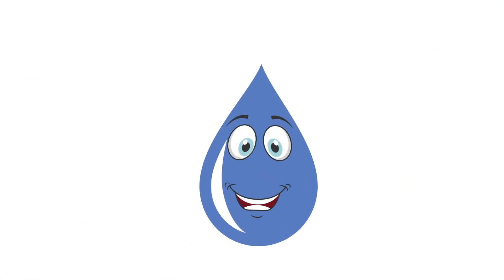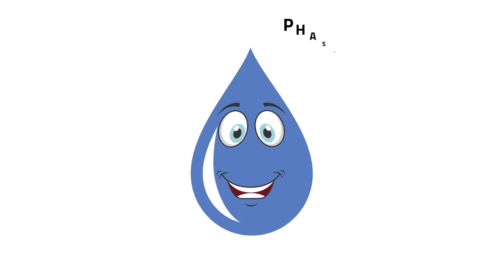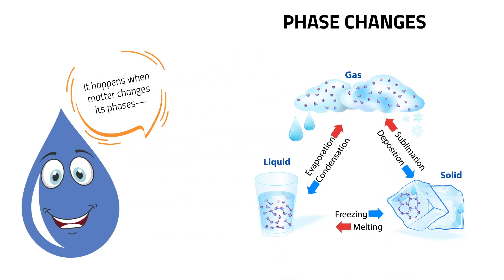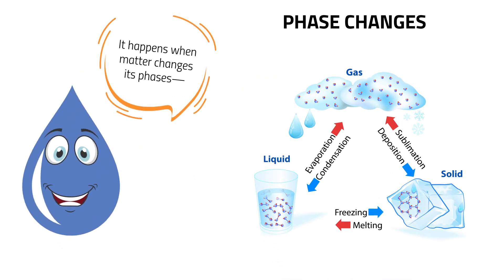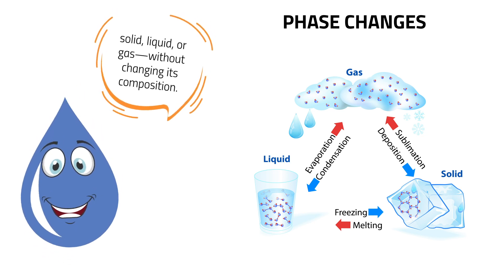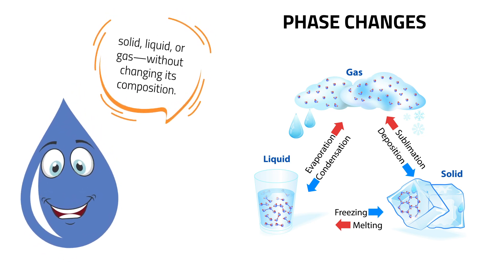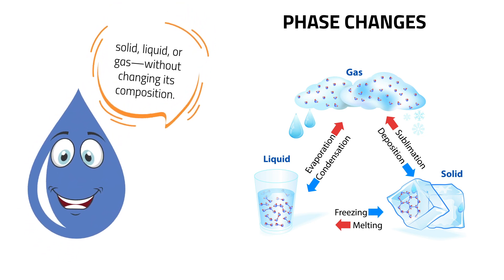The changes that take place in matter are called phase changes. It happens when matter changes its phases — solid, liquid, or gas — without changing its composition.